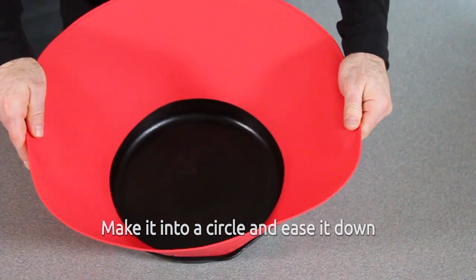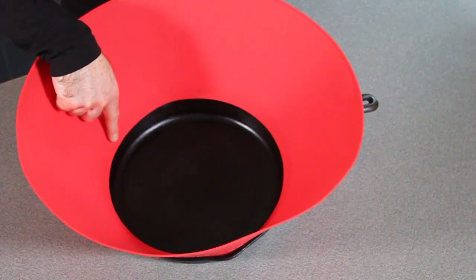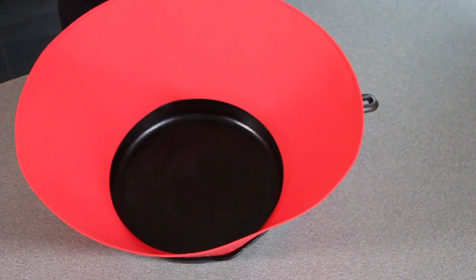Also notice there's a little bit of room between the bottom of the frywall and your cooking surface. The frywall is designed that way so you'll always have uninterrupted access to your entire cooking surface.